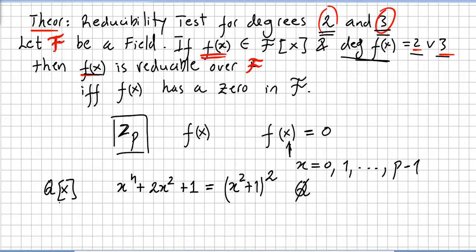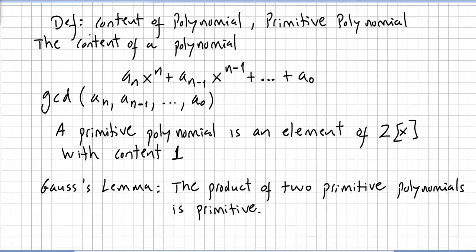Quick definition: We move into a quick definition after the reducibility test—the content of a polynomial and another concept, the primitive polynomial. So the content of a polynomial...